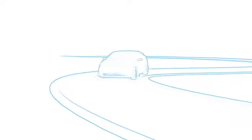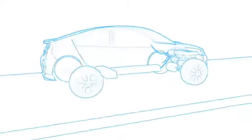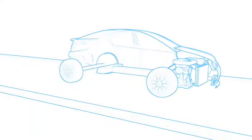The Opel Ampera is an extended range electric vehicle, or E-Rev. An extended range electric vehicle is an electric car with an extended driving range.